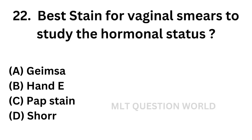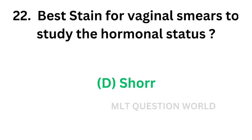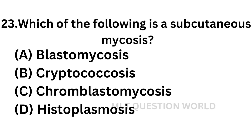Question number twenty-two: Best stain for vaginal smears to study the hormonal status — Option A: Giemsa, Option B: Hematoxylin and eosin stain, Option C: Pap stain, Option D: Shorr stain. The correct answer is Option D — Shorr stain. Shorr stain is used for hormonal status of vaginal smears.